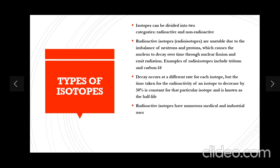Radioactive isotopes have numerous medical and industrial uses that we will discuss in a moment. Non-radioactive isotopes are stable atoms which really only differ in their mass. Our main focus will be on radioactive isotopes. They are unstable because they have an unstable combination of protons and neutrons, and these isotopes decay emitting radiation that includes alpha, beta, and gamma rays.